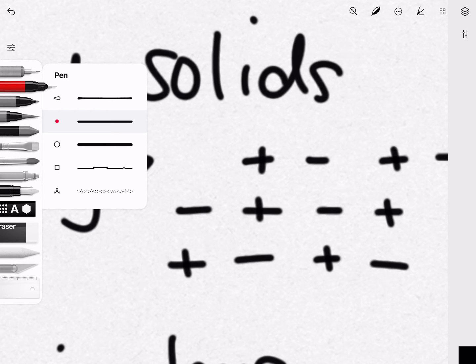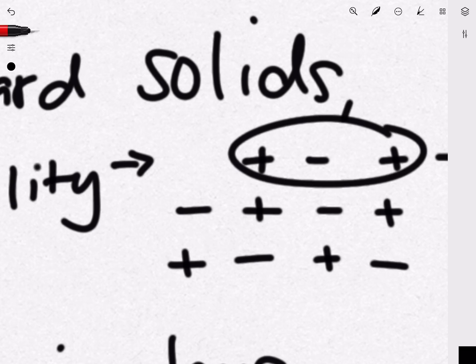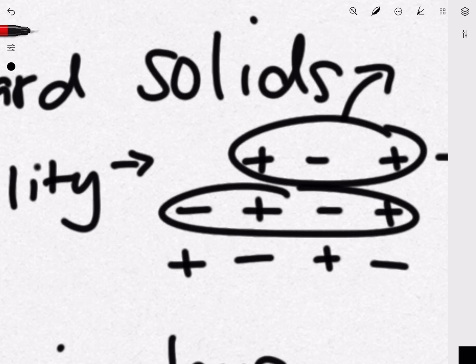Because as we know, like charges repel, opposite charges attract, meaning that this top layer will just come off as it repels that bottom layer, meaning that ionic structures are prone to chipping and breaking quite easily under forces.